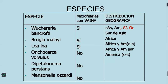Otra manera de clasificar las microfilarias es si tienen o no tienen vaina. Wuchereria bancrofti, Brugia malayi y Loa loa son microfilarias con vaina, y se encuentran en Centroamérica, en África, en Oceanía y en el sur de Asia. Brugia malayi se encuentra en África y Loa loa en África y Sudamérica. Estas son las microfilarias con vaina.